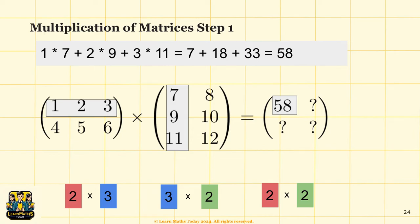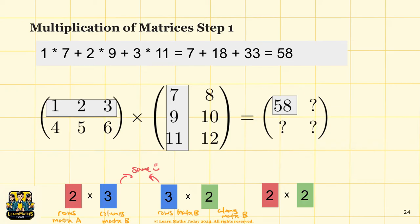Now let's look at an example to see how we calculate the multiplication of matrices. We have a 2 by 3 matrix A and a 3 by 2 matrix B. Since the number of columns in A equals the number of rows in B, multiplication is possible, and the resulting matrix will be 2 by 2. For each element, you multiply corresponding elements from a row of matrix A and a column of matrix B, then sum the products.